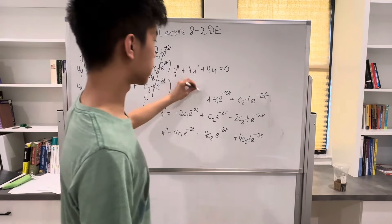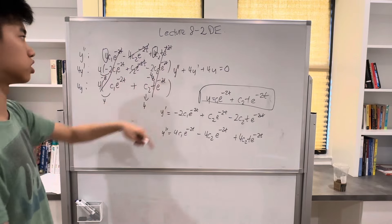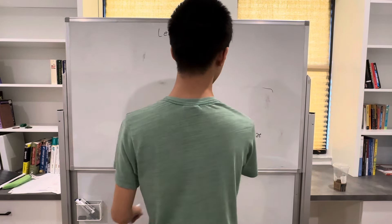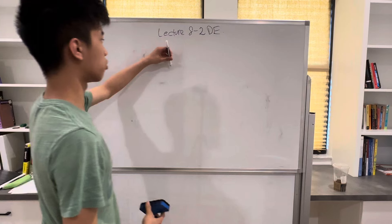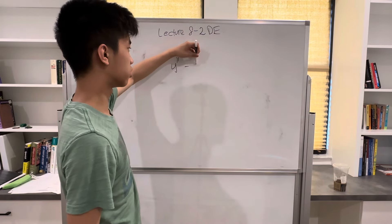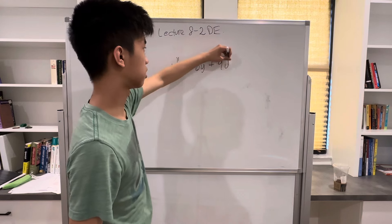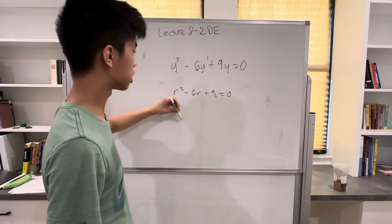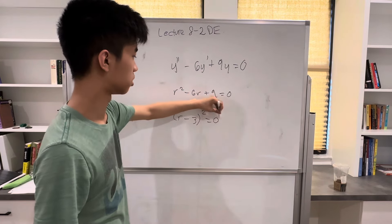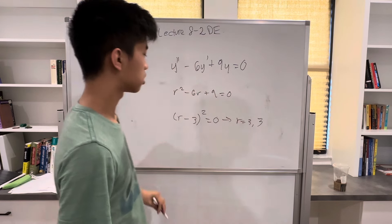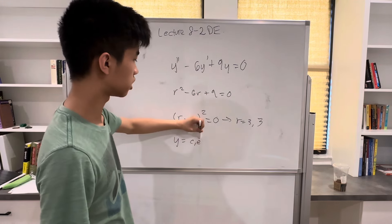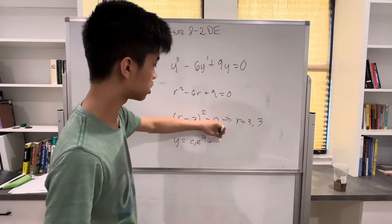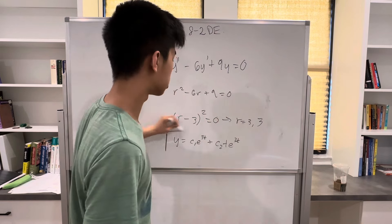This proves that this is a correct solution to the differential equation. Let's cover one more problem. Say we have y'' - 6y' + 9y = 0. The characteristic equation is r² - 6r + 9 = 0, which factors as (r - 3)² = 0, giving r = 3, twice. So our general solution is y = c₁e^(3t) + c₂te^(3t).